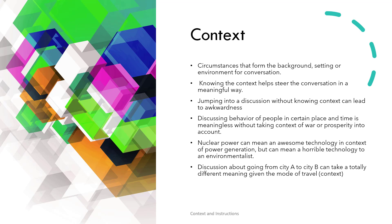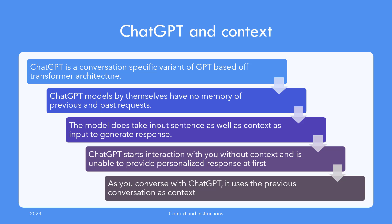The main point is that context is critically important to have a meaningful and fulfilling conversation. Earlier, we discussed the chat room example where participants start with no idea who the other person is. Come to think of it, ChatGPT has to do it all the time.